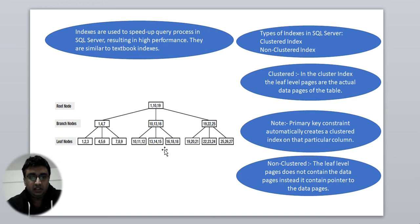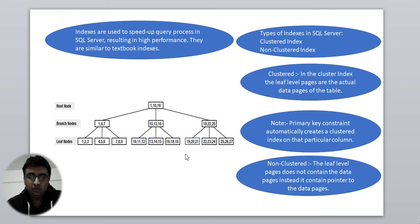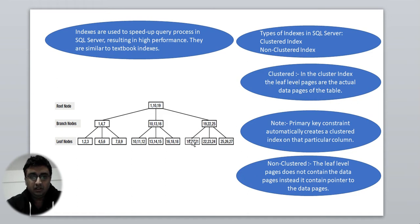This diagram is the best example to understand clustered and non-clustered indexes. We have the leaf-level nodes, branch nodes (also called intermediate nodes), and the root node — it's a B-tree structure, similar to what you'd remember from data structures. The leaf-level nodes contain the actual data, and that is called the clustered index. By definition, in a clustered index, the leaf-level pages are the actual data pages of the table.